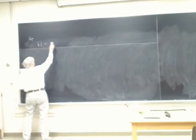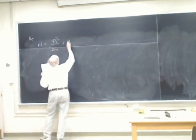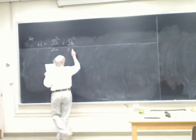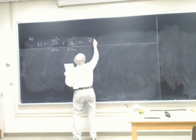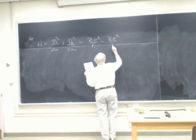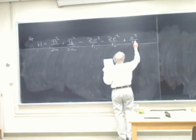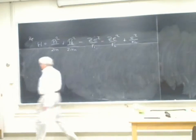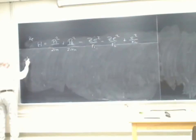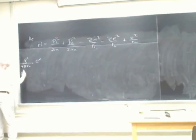For helium, you have two electrons. Each is attracted to the nucleus, and they repel each other. In NIMK units, Q squared over pi epsilon zero equals E squared, where E squared over H-bar C is approximately 1/137.